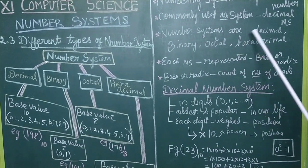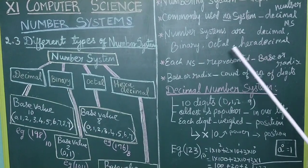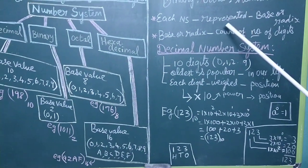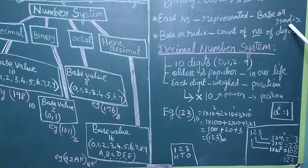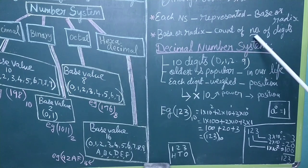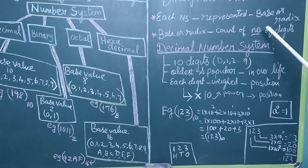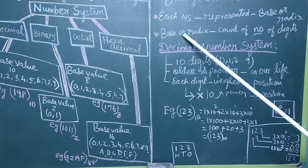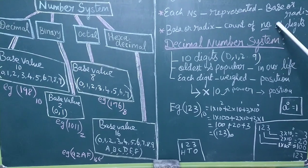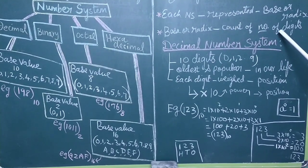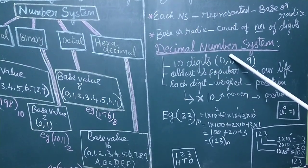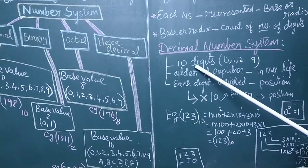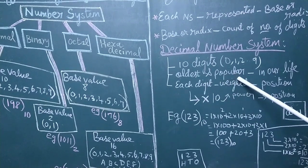So, all together the number systems are: decimal, binary, octal, and hexadecimal. Each number system has a weight, and that weight represents the base or radix, which gives a count of the number of digits used. The base is called the radix. For decimal, the numbers used are 0 to 9, that is 10 digits, which is the base value. The decimal number system is the oldest and most popular number system used in daily life.